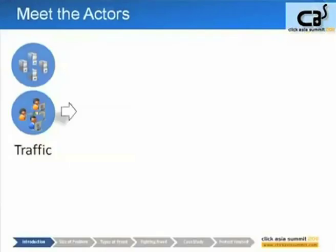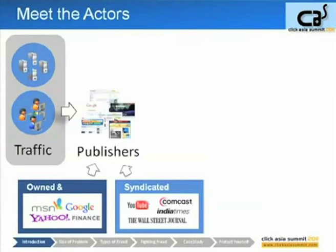These visitors hit publishers, which can be anything from owned-and-operated properties such as Google itself, Yahoo Finance, or MSN. But these big search engines have so many visitors they need more inventory to satisfy demand, so they make deals with other larger properties — Comcast, YouTube, Wall Street Journal, India Times — who strike deals with Google, Bing, and Yahoo so that every time an ad is clicked they get a cut of that revenue. Typically it's 80/20: the syndicated publisher gets 80% and the search engine platform gets 20%.